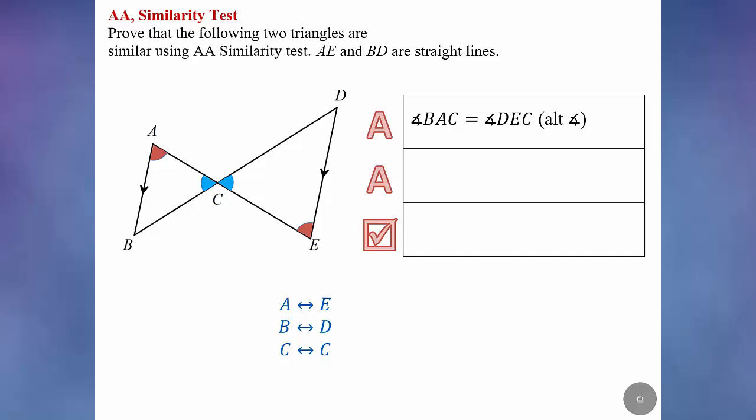For the first A, angle BAC is equal to angle DEC because of alternate angles. When writing angle BAC, make sure the vertices BAC corresponds to and matches DEC. You can check using the vertices below. BAC, which is the second, first and third vertices should correspond to DEC, the second, first and third vertices as well.